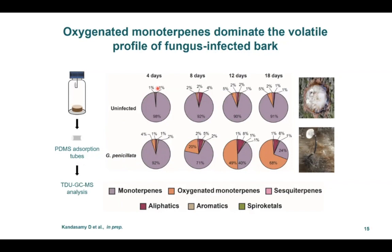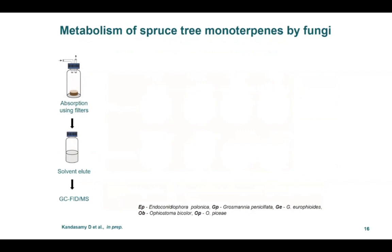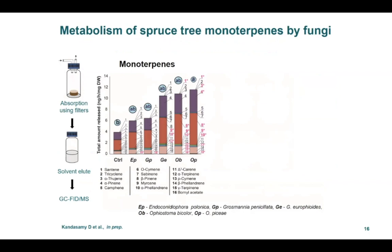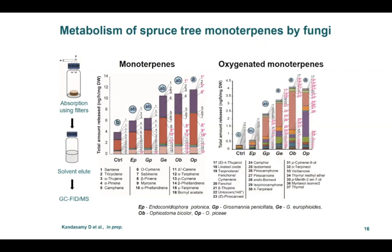The bark beetle-associated fungi oxidized host monoterpenes into oxygenated monoterpenes. Each bar in this graph represents the total monoterpene emission rate in response to different fungal treatments. Individual monoterpenes are represented in different colors in stacked bars. The control bark without fungus emitted low amounts of monoterpenes, and the presence of different fungi slightly stimulated the emission of total monoterpenes with no clear change in composition. On the other hand, there was a dramatic increase in oxygenated monoterpenes only in the presence of fungi. The exception was E. polonica-infected bark, whose oxygenated monoterpene profile was not significantly different from the control.